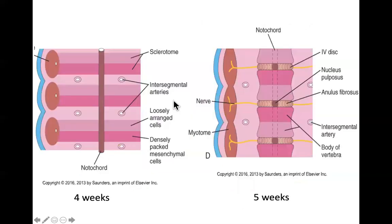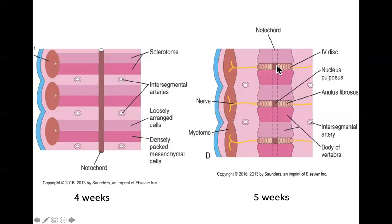Let's take a look at a coronal section — this would be looking at the spine from the front with the spine cut in half. Looking at the four-week embryo, you'll notice that the notochord is still pretty much intact. But by five weeks, most of that notochord is gone, except for this little nubbin that gets encased by the discs. The discs form exactly the way we talked about.